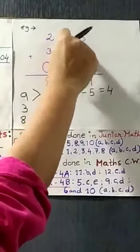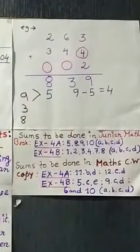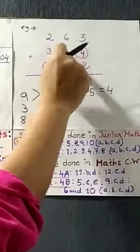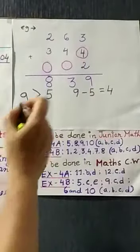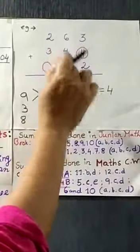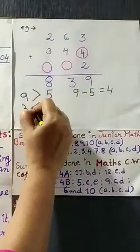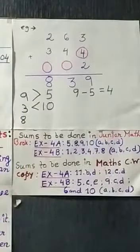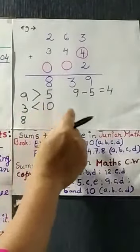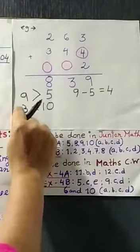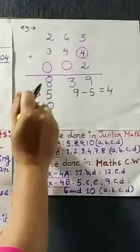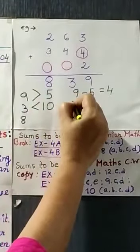Next column, you see 6 and 4. So, what is the addition of 6 and 4? 10. So, 10 is bigger than 3 or 3 is smaller than 10. 3 is smaller than 10. So, what we will do? We will have to add 10 with this 3. So, 10 plus 3. 13.